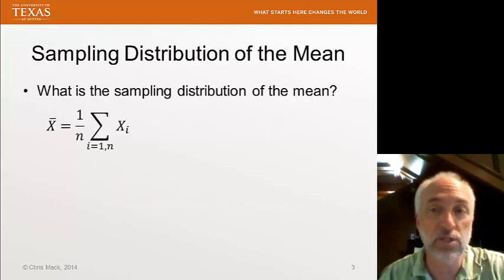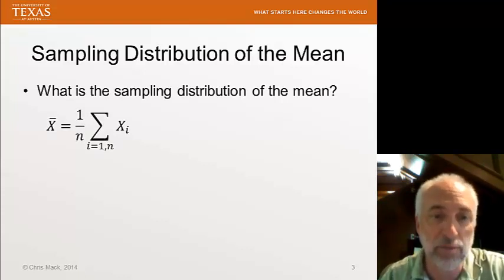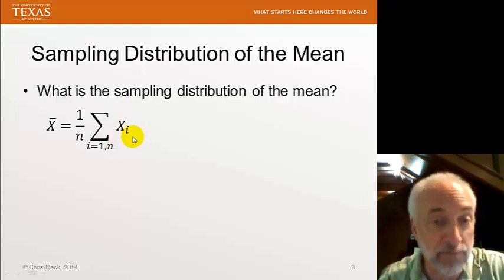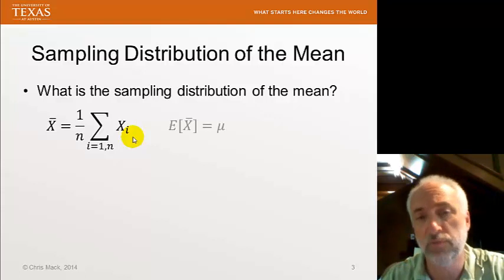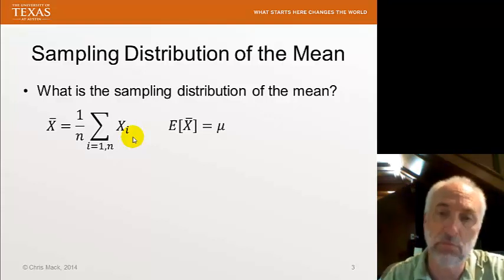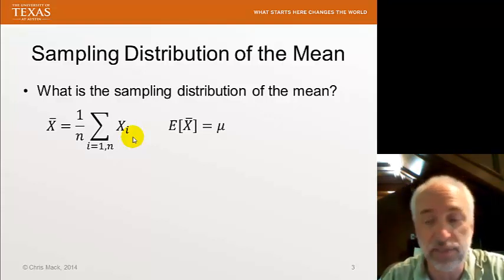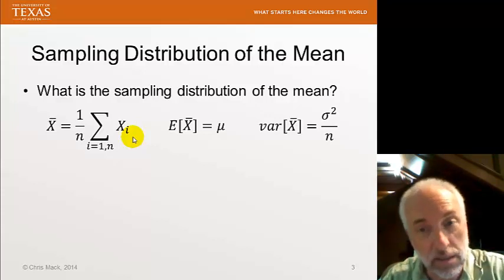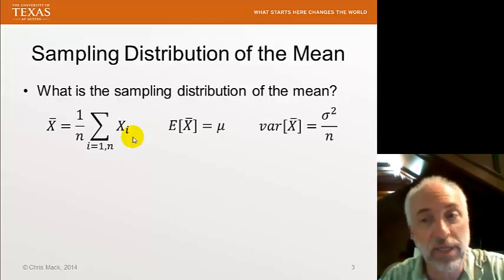What is the sampling distribution of the mean? Well, the mean, x-bar, is the mean of a set of outputs of experiments. Every xi, the i-th output of some measurement or some experiment, is a random variable. I sum up those random variables, divide by n. I get another random variable, the mean of the sample. The expectation value of that sample mean equals the population mean. In other words, this is an unbiased estimator. And the variance of that sample mean is the population variance divided by the sample size.